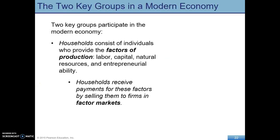So what's the market look like? In our simplified version of the modern economy, we can think about there being two groups. Households, who consist of individuals who provide the factors of production. The factors of production here are labor, capital, natural resources, and entrepreneurship — entrepreneurial ability.